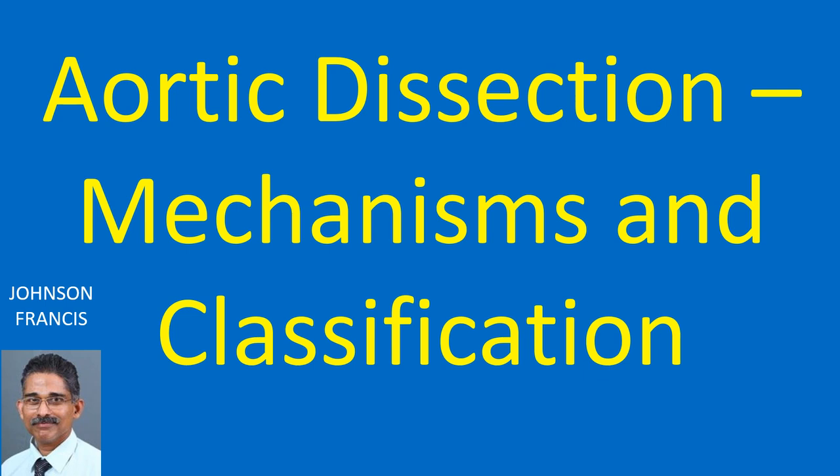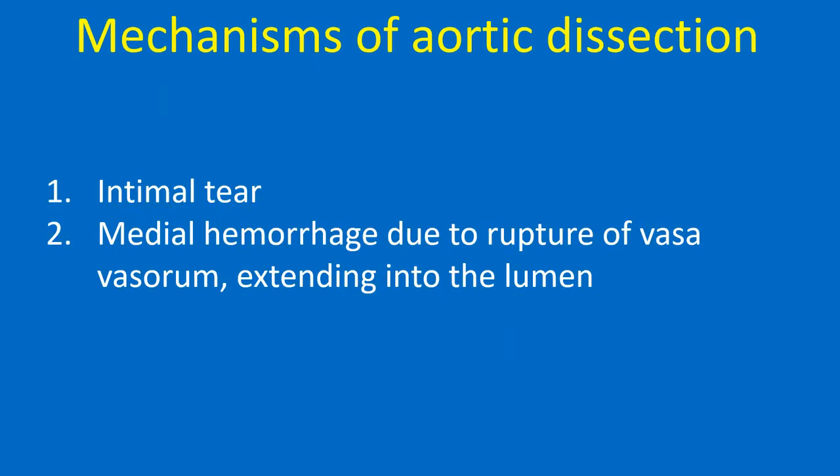Aortic dissection: mechanisms and classification. Mechanisms of aortic dissection: 1. Intimal tear. 2. Medial hemorrhage due to rupture of vasa vasorum extending into the lumen.